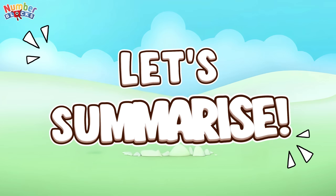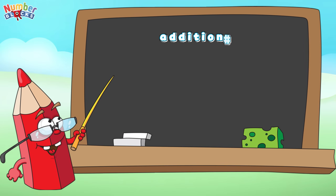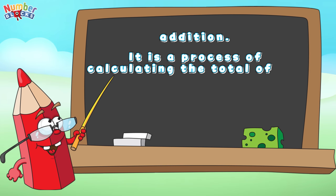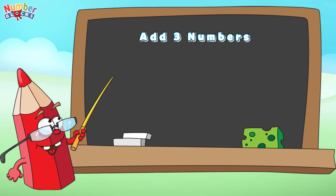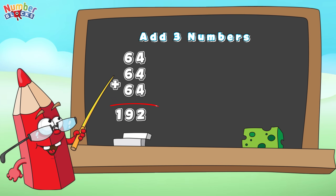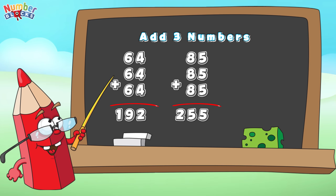Let's summarize. Let's define addition — it is a process of calculating the total of two or more numbers. Let's add three numbers: 64 plus 64 plus 64 is equals to 192. 85 plus 85 plus 85 is equals to 255.